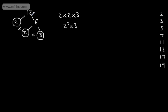So all we've done is broken 12 down into the product. Product means multiply — prime factors. We've just written it as prime factors multiplied by one another, and we can write all numbers in this form.